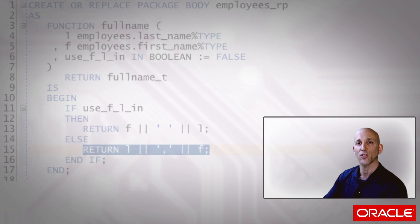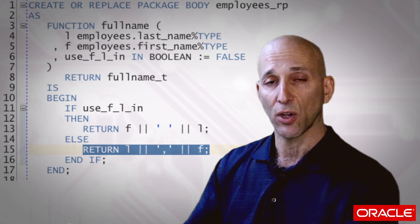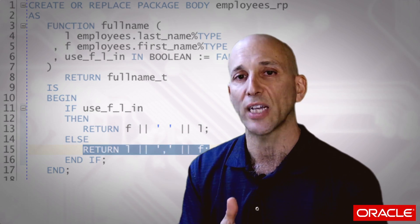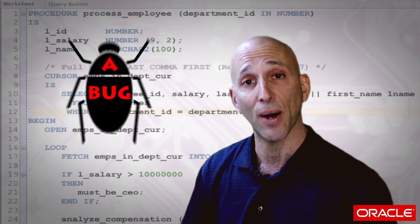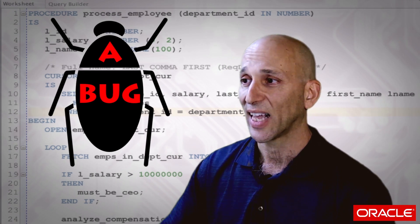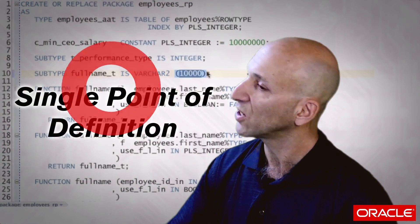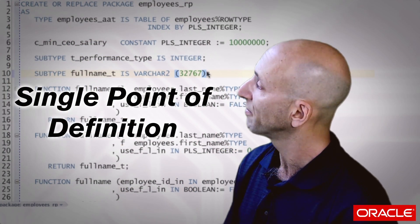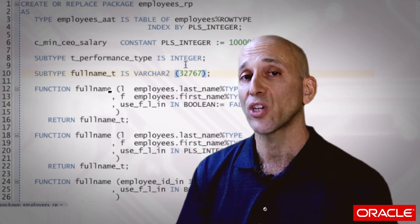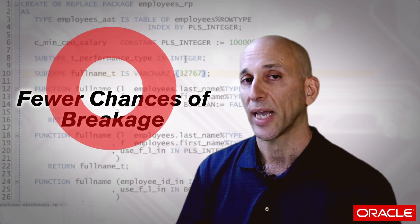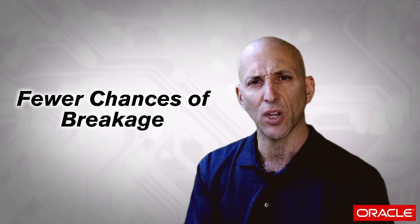The very simple rule you can follow: every VARCHAR2 declaration should be considered a bug in your code, unless it's the single point of definition through the subtype. If you follow this rule, you'll have way fewer chances of breakage over time. This is one of those classic examples where you write the code today, it works fine, goes into production, works fine.